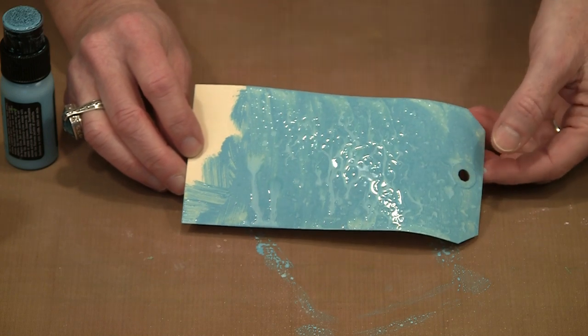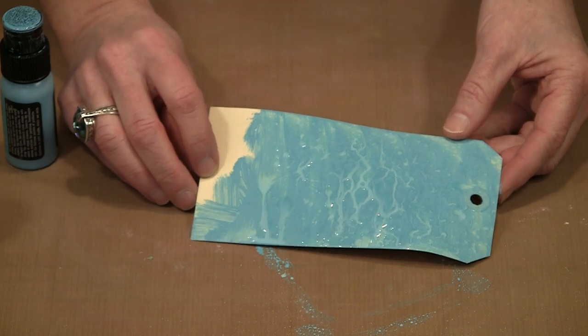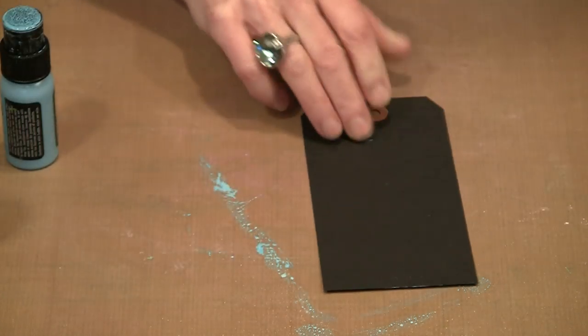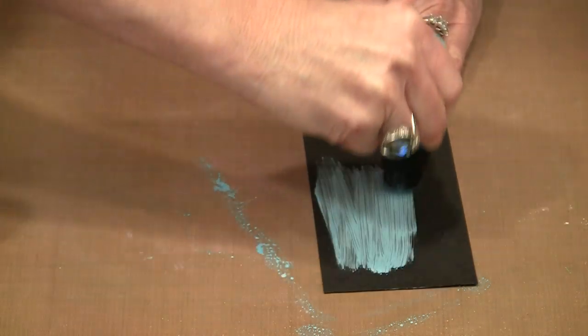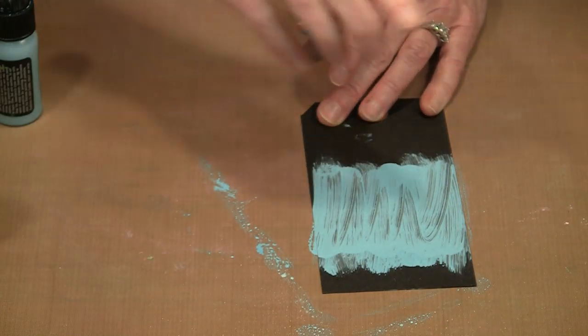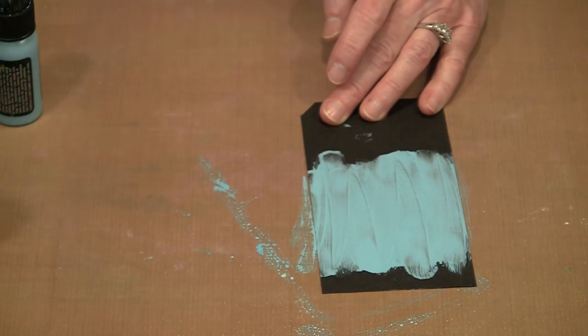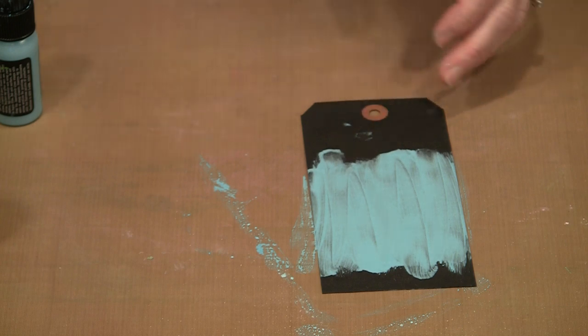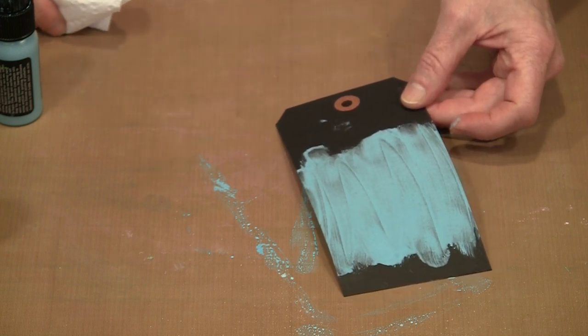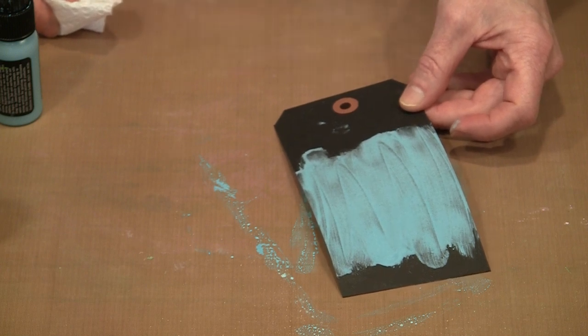What makes these paints very different than the other Distress products is twofold. First, they're opaque, which means when you put them down, you're going to get coverage even on something like a black tag. It might take two coats, but you'll get really good coverage over that black. The opacity is very different than all the other Distress products which tend to be translucent. In addition, these paints are permanent once they're dry on paper, fabric, metal, glass, and a variety of other surfaces.